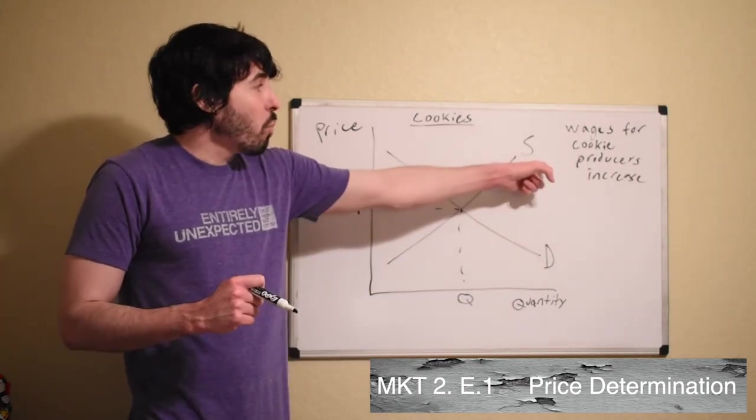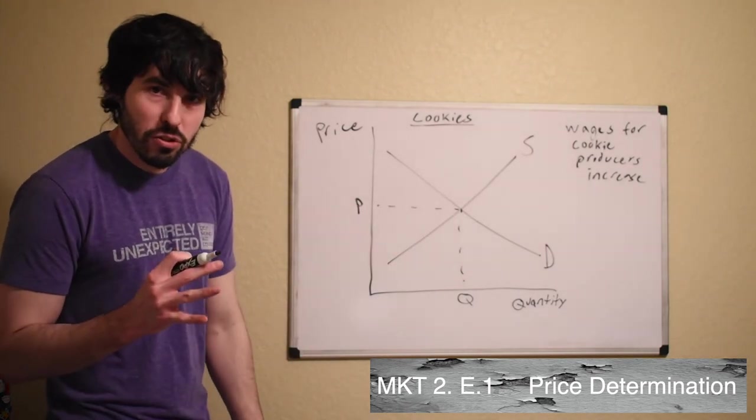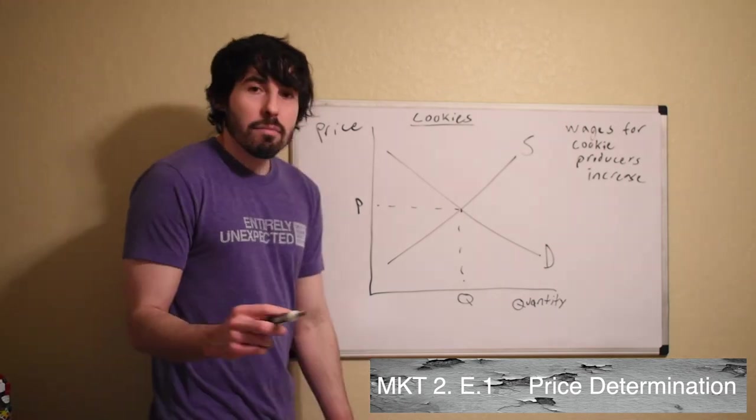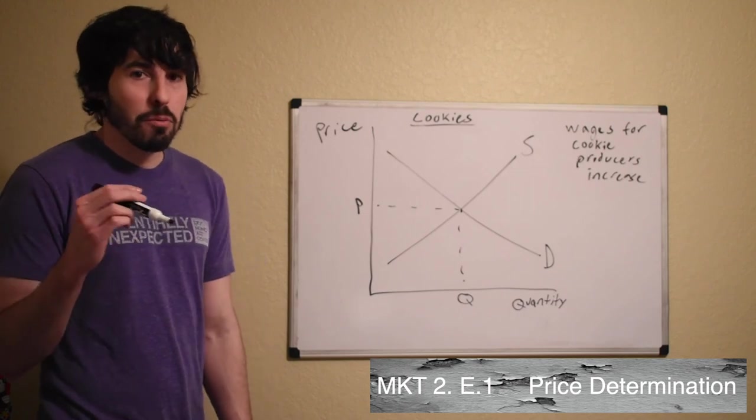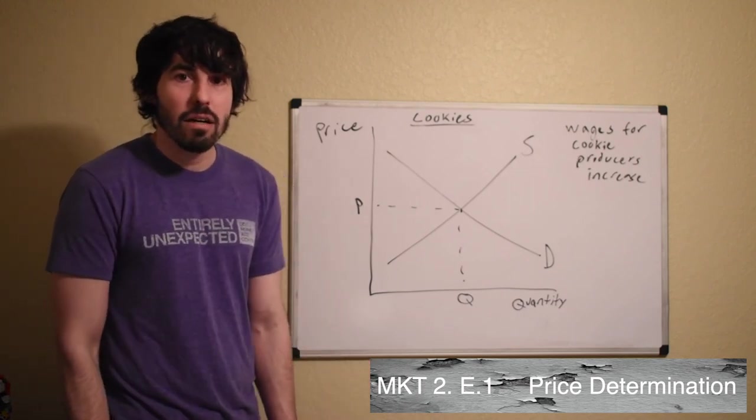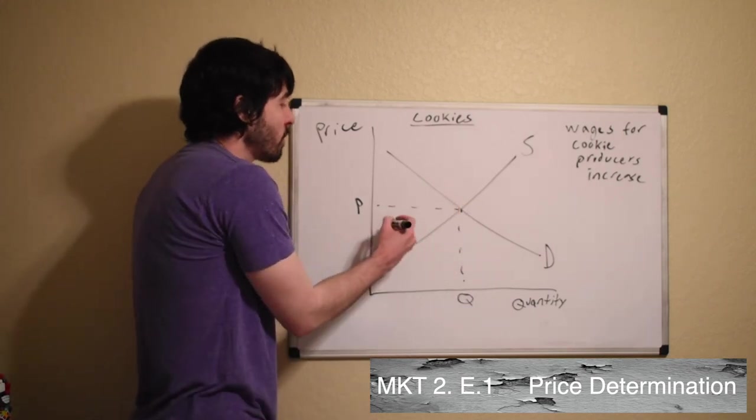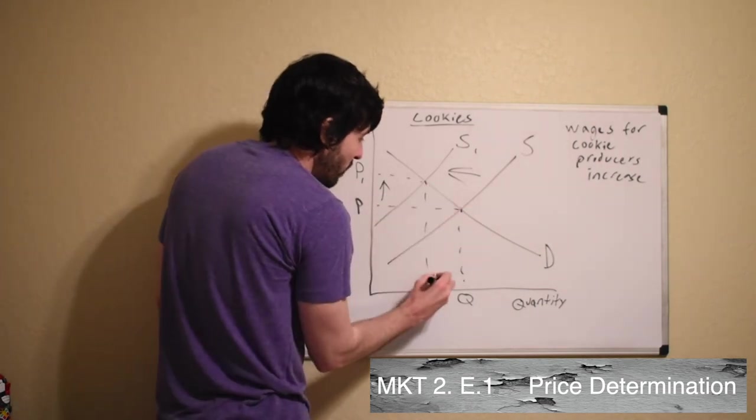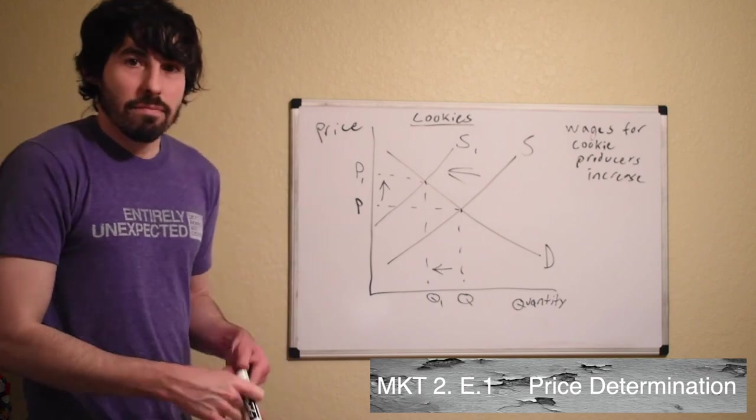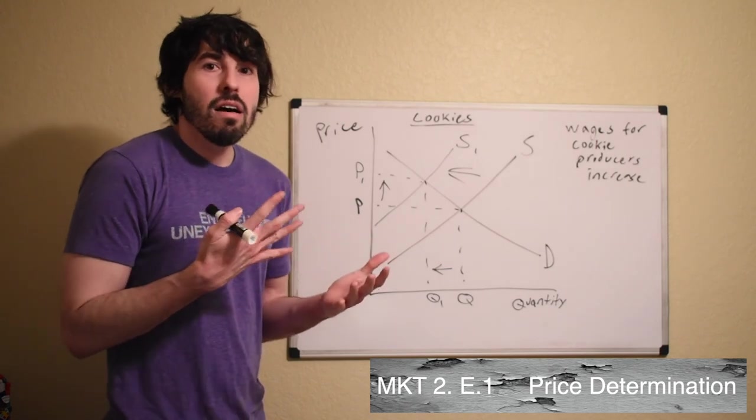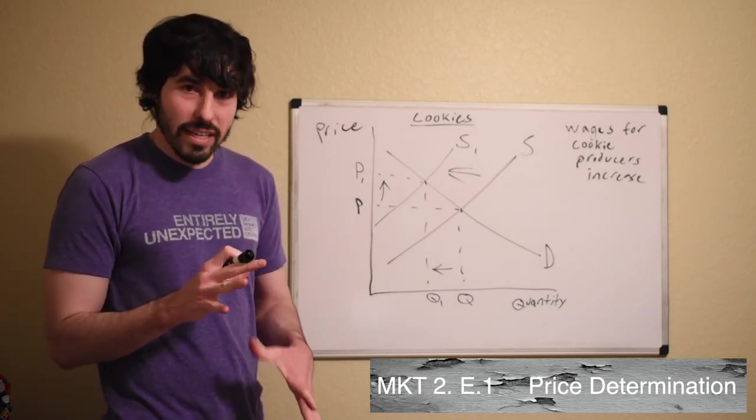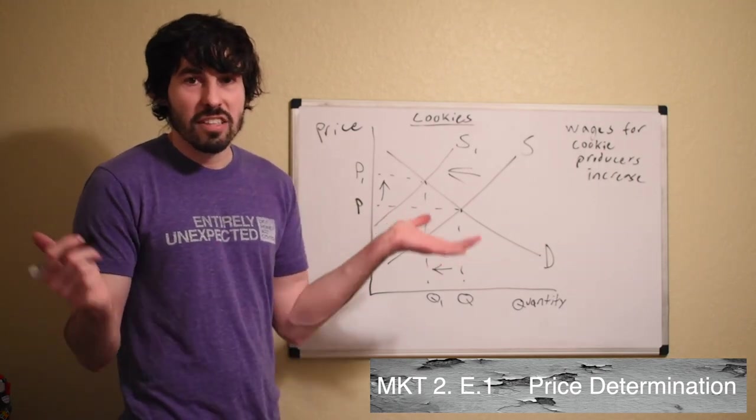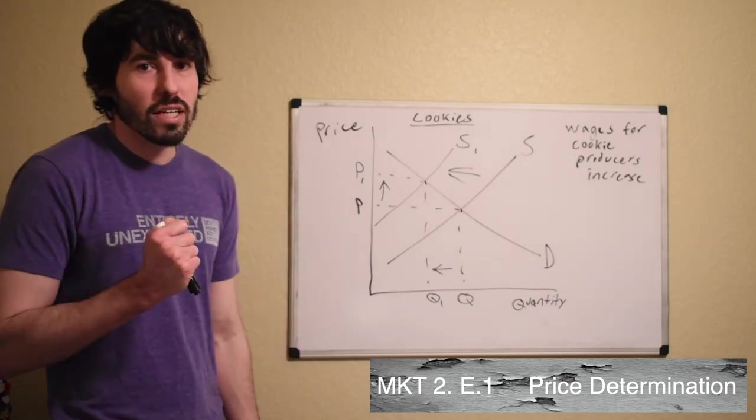So if the wages for cookie producers increase and now it costs more to pay people to make cookies, are they going to make more or less cookies? They're going to make less because if they have to pay each individual worker more money, then they're probably going to let a couple of people go because they only have so much money per day to be able to pay laborers. So what will happen is the supply of cookies will shift to the left and decrease. You will now have a higher price for cookies because there are less cookies on the shelf. So again, think about it like this. Let's say I have $10 per day to pay laborers to make cookies for me. If I used to pay $5 per day to each worker and now I have to pay $8, I'm going to have to let one of those people go because I only have $10 a day to produce these cookies. I don't have the $16 that it will now take. So hopefully that makes sense and I'm going to spend the rest of this semester driving that point home.